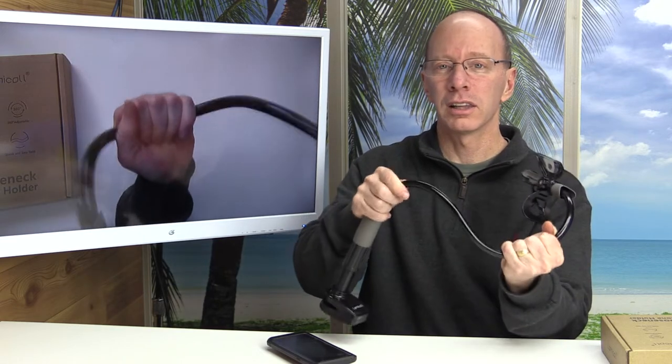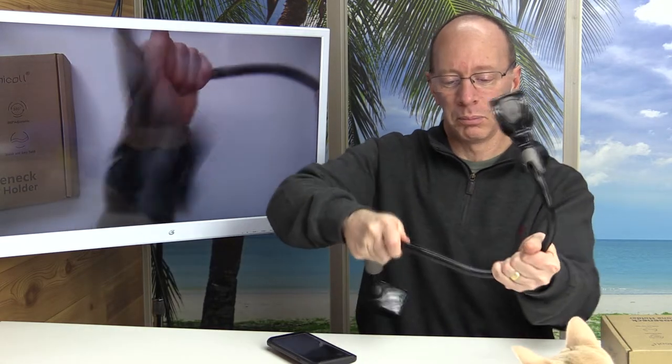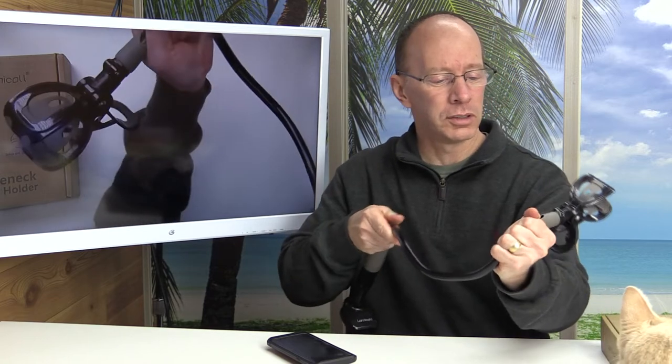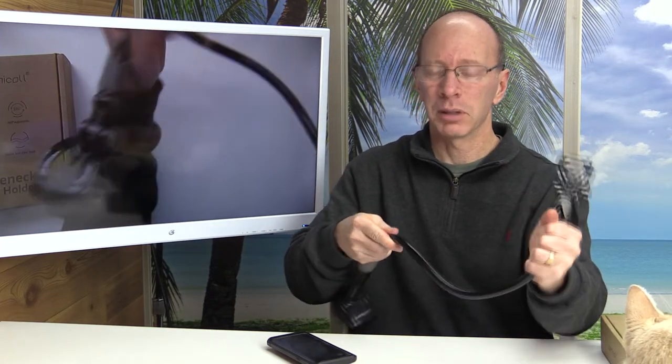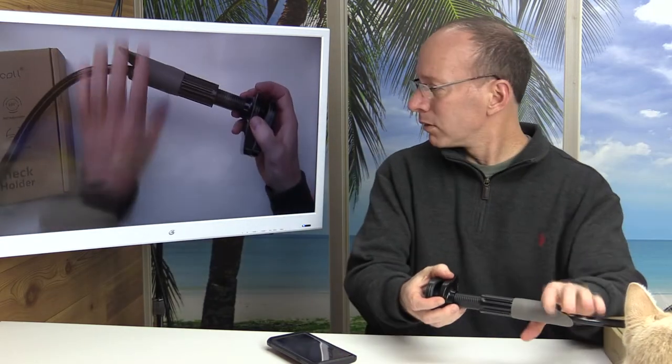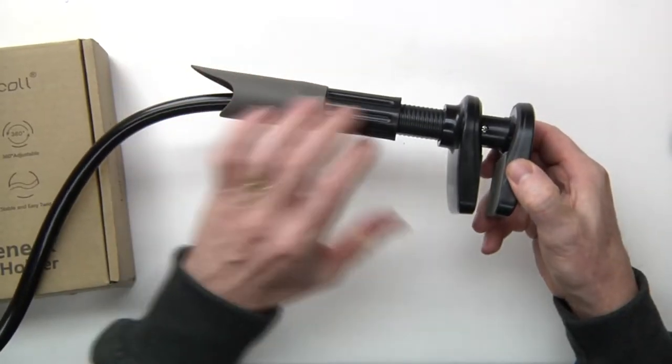You have to use a little bit of muscle to be able to move it around, and once you do move it, it's going to stay in place. This part right here is the part that's going to attach to the side of a table.